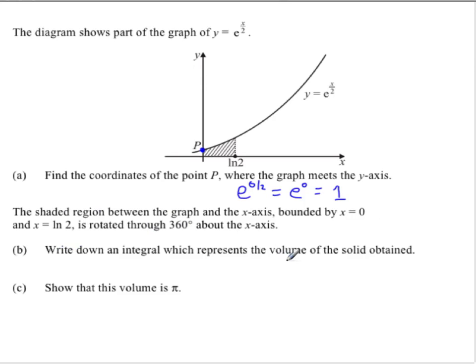Then it says write down an integral that represents the volume of the solid. That's the integral from start to finish of π r squared, and the radius is just the y value. So π y squared gives us π times e to the x over 2 squared dx.